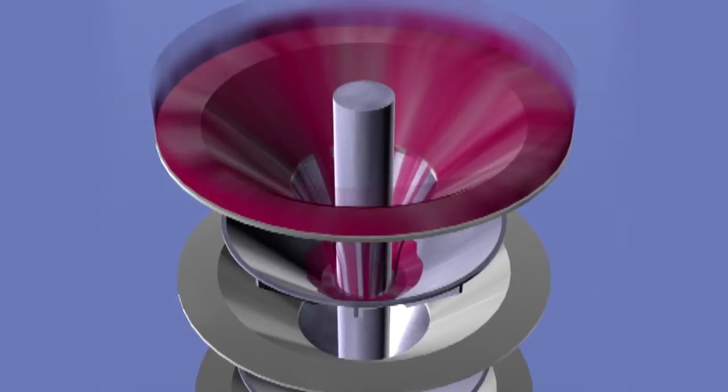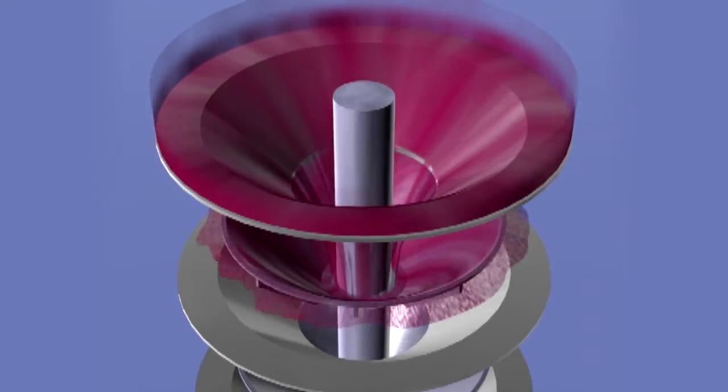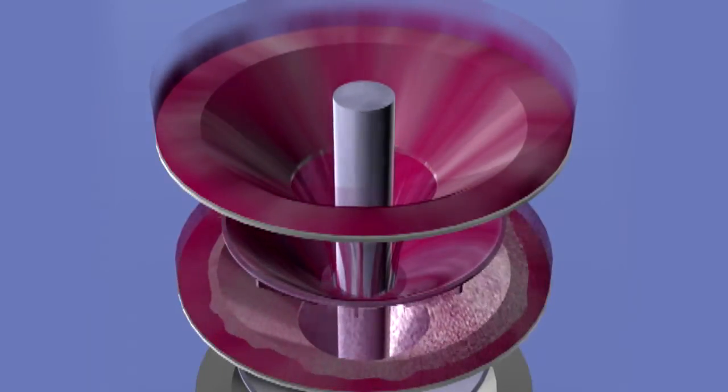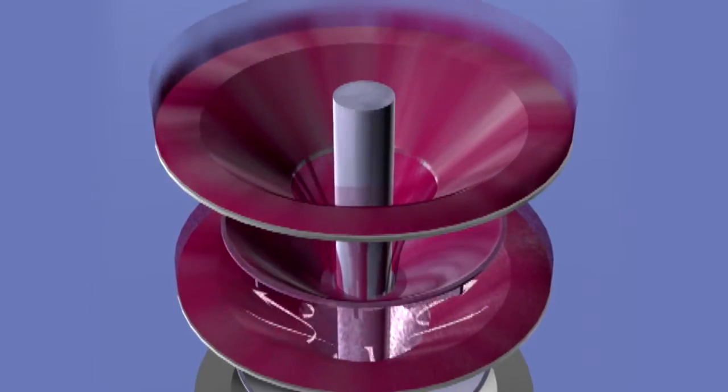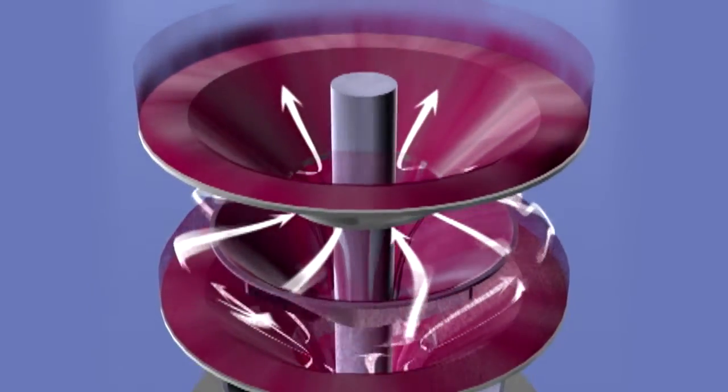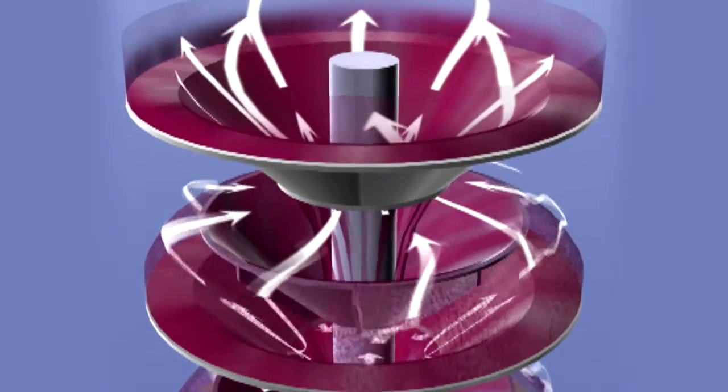The spinning cones gently and repeatedly spin the wine out into thin liquid films. Simultaneously, a cool vapor created from the wine itself rises from below and carries off all the lightest molecules in the liquid.